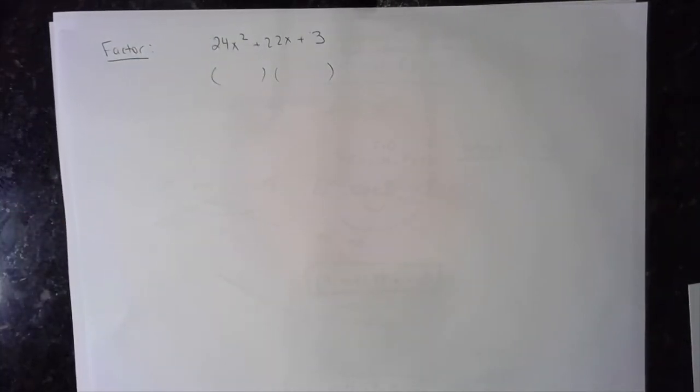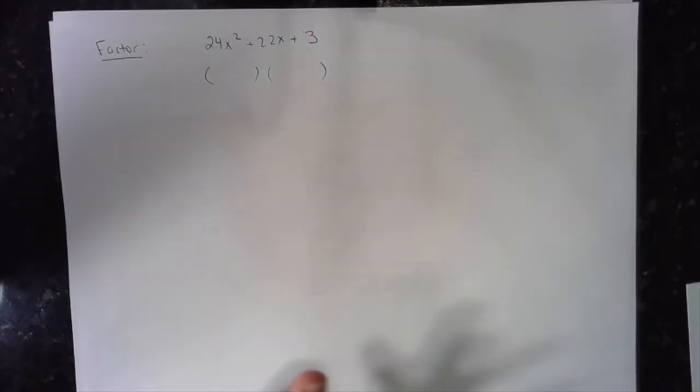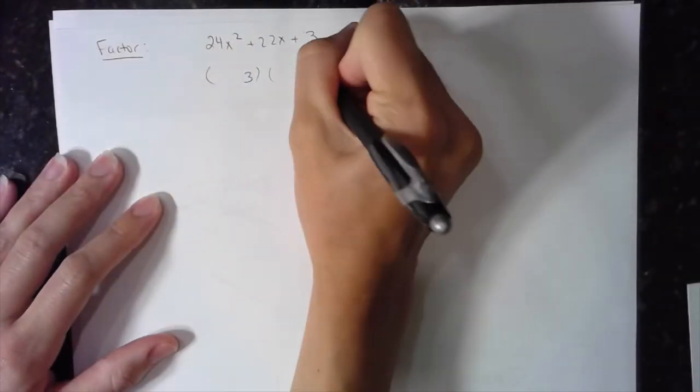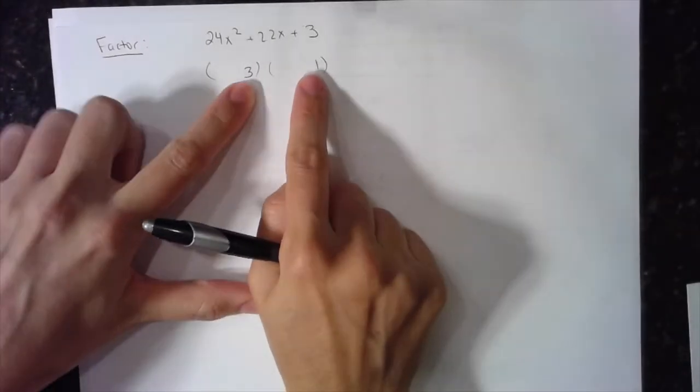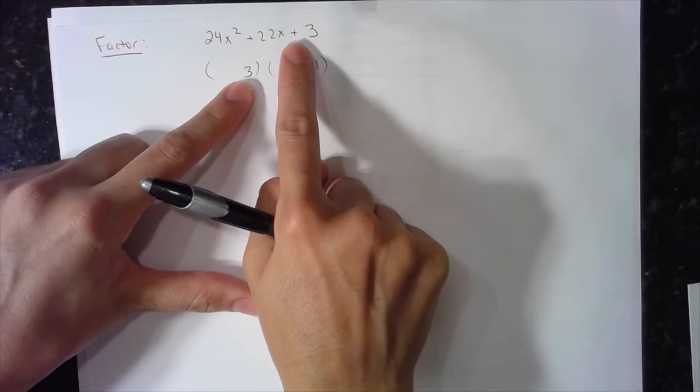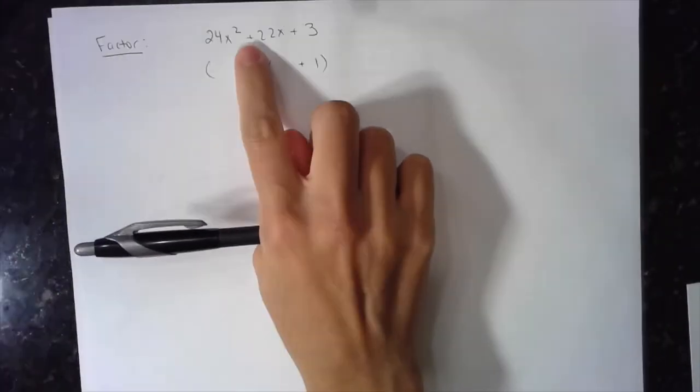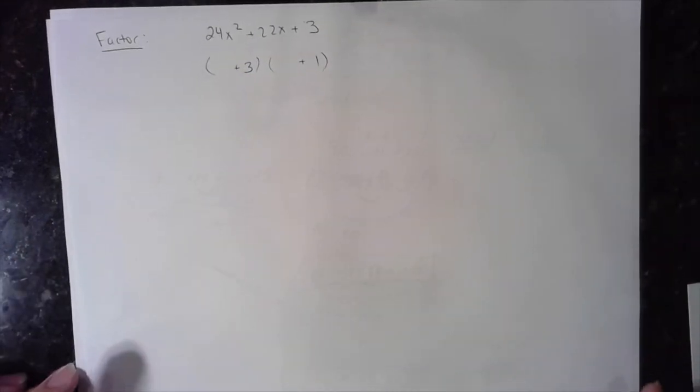The nice thing about this one, again, is the last term only has two factors of it. The first term, though, 24 has a lot of factors. But either way, it's got to be a 3 and a 1. And actually, being that these two have to multiply to give you positive, they're both positive or both negative. But what do you think? Are they both positive or are they both negative? They're both going to be positive because the middle term is also positive. And of course, if I can't recognize that now, I'll check it again, verify at the end, make sure that I'm right.